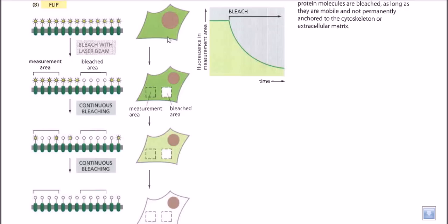After tagging, we use a high-power laser beam and expose a particular surface area of the cell membrane to it. This bleaches that area — meaning that portion of the cell membrane loses its fluorescence activity. So a specific region of the cell membrane is bleached using the laser beam.